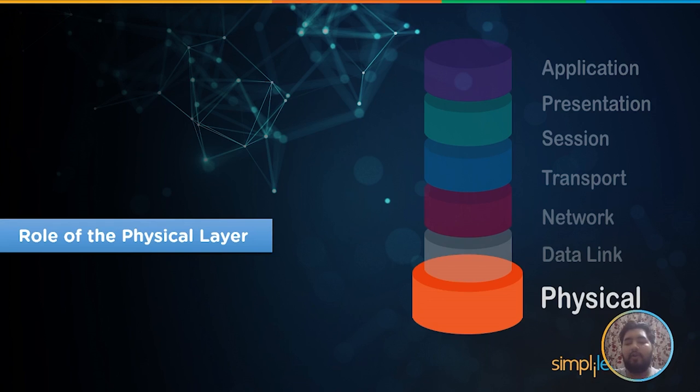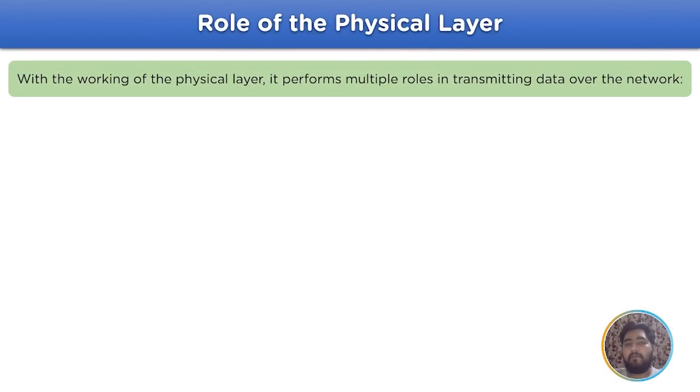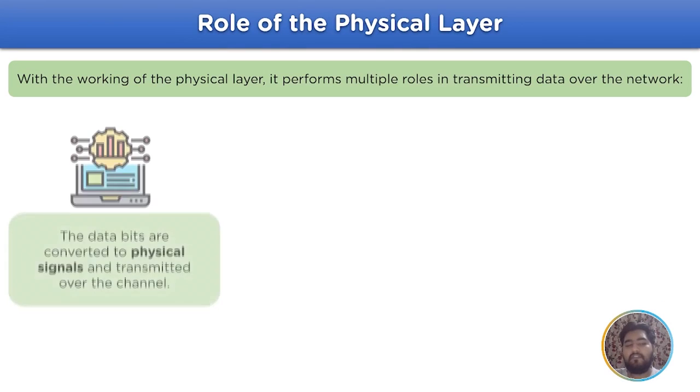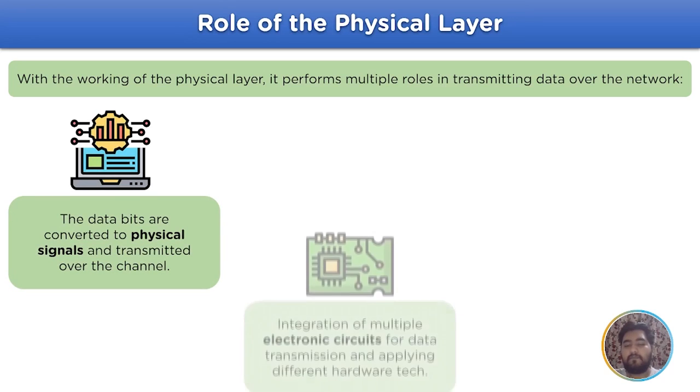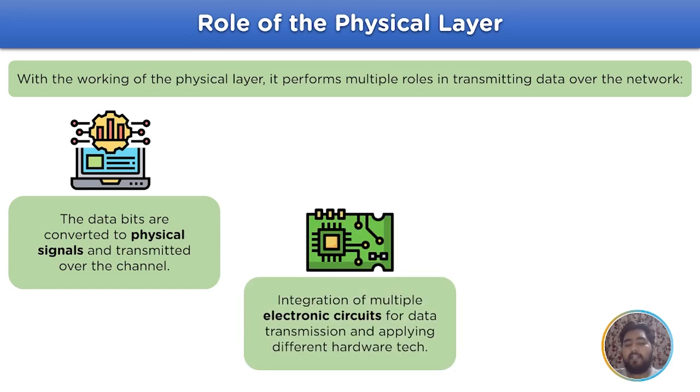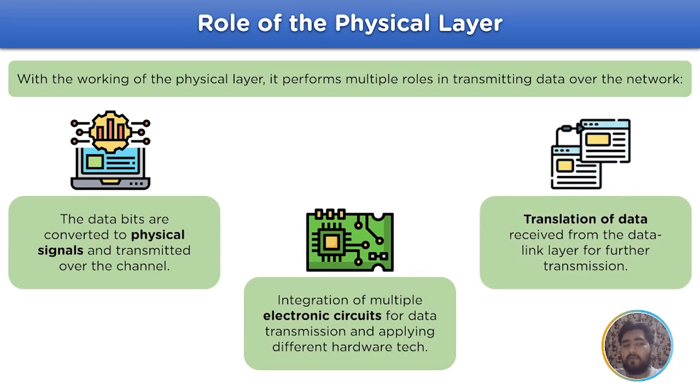Now let's move on to the role of the physical layer in a model. The physical layer due to data transmission ability performs multiple roles which are the data bits are converted to physical signals and transmitted over the channel by the physical layer. It also integrates multiple electronic sockets for data transmission and apply different technological hardware. It is also responsible for translation of data that is received from the upper layer in the OSI model.